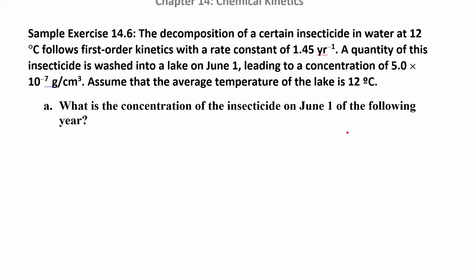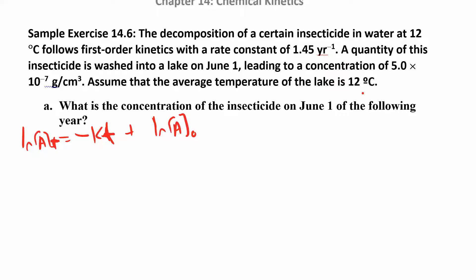Here's the equation again: ln[A]_t = -Kt + ln[A]₀. We're going to read through a word problem and plug things in. Note that T here is time, not temperature — so when the problem mentions temperature, we don't need to use it. They're just telling you the temperature is constant, which means the rate constant is constant. If temperature changed, the problem would be much more difficult. Be careful not to multiply everything through — find the ln term first, then add.